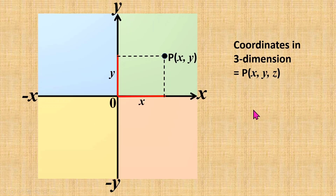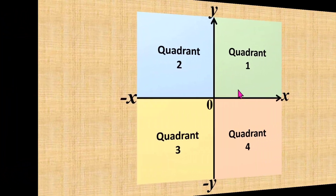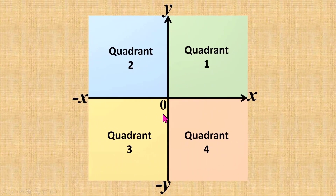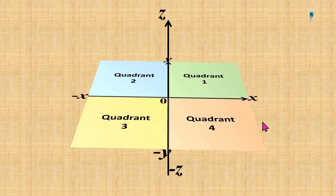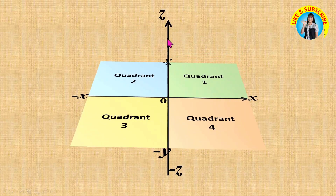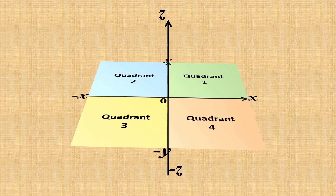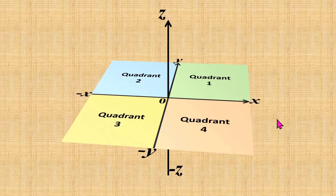So, where is the Z-axis? Let's look at this two-dimensional plane. This two-dimensional plane is the XY plane because we use the X-axis and Y-axis, with positive X on the right, negative X on the left, positive Y on top, and negative Y below. Now, to see the Z-axis, I'm going to turn the plane slightly down like this. Now we can see the Z-axis, but from this direction I found that the Z-axis and the Y-axis are at the same place. So now I'm going to turn the plane slightly like this.